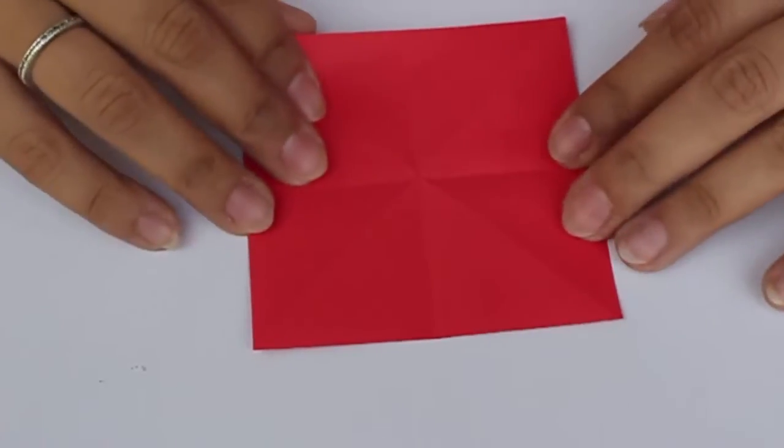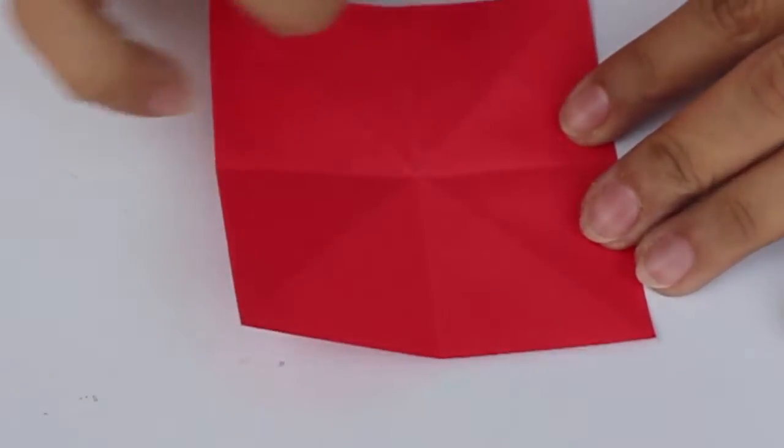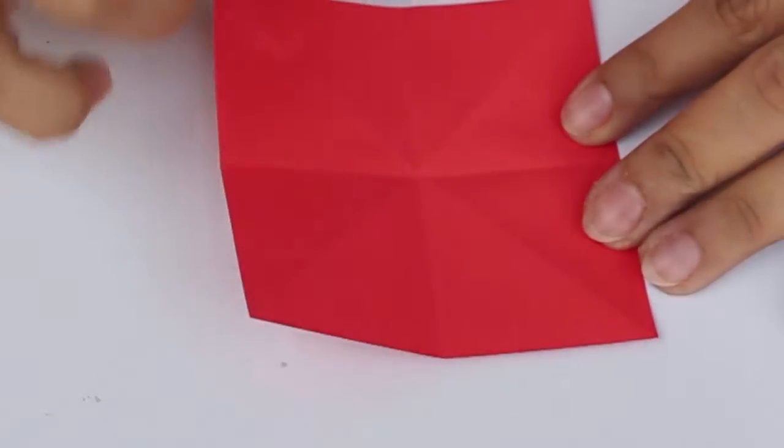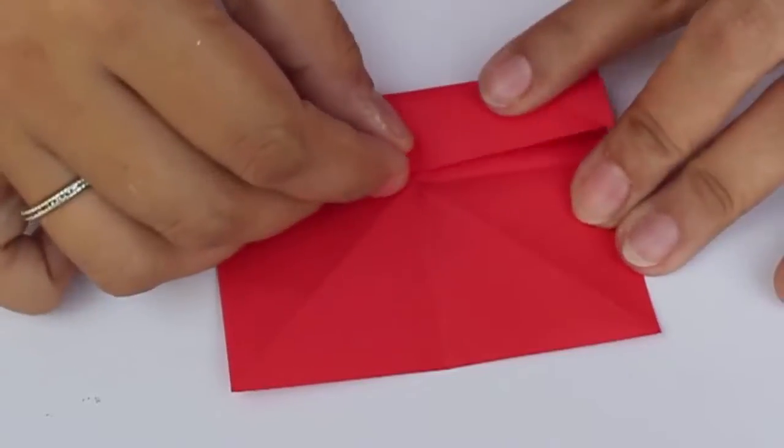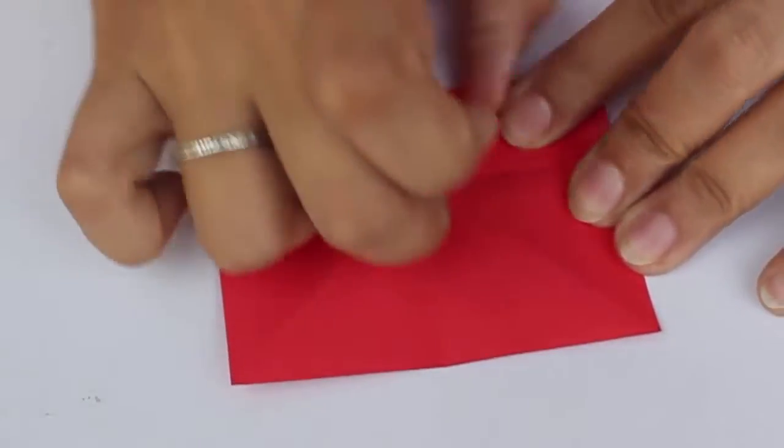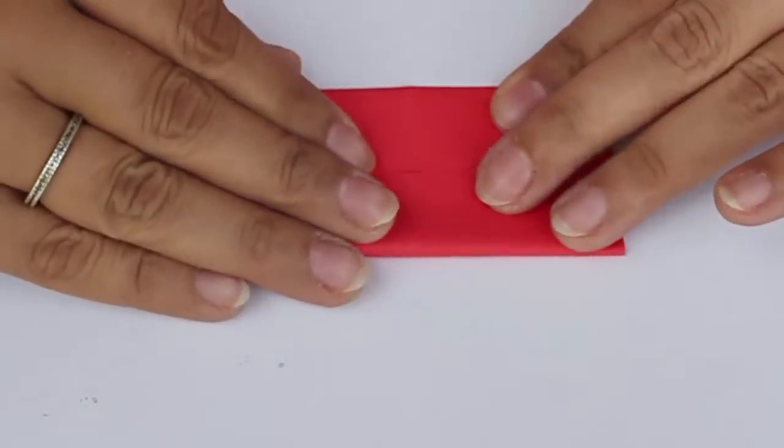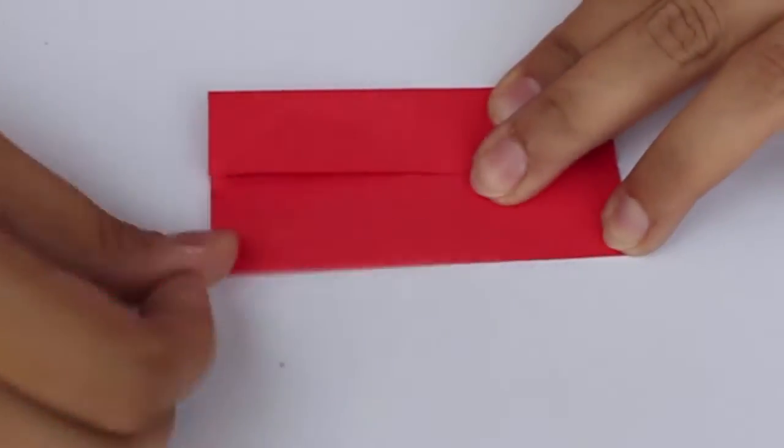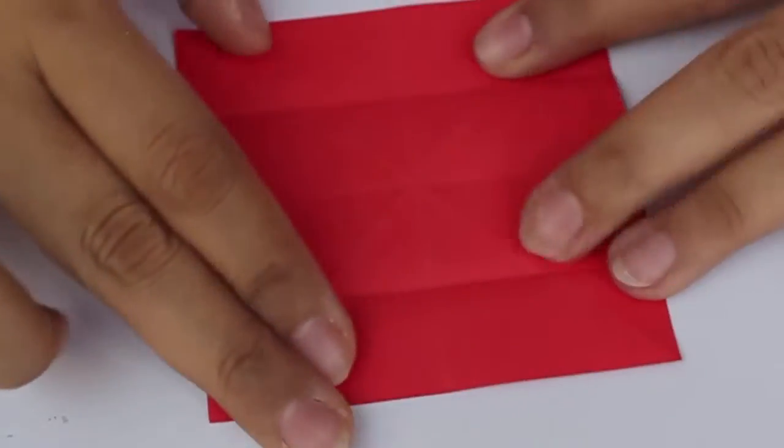From here make what is called the cupboard fold, which means two opposite edges come and meet the central line like this. That's half the cupboard folded and that's the second half folded as well.